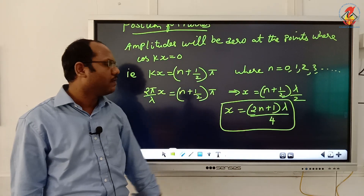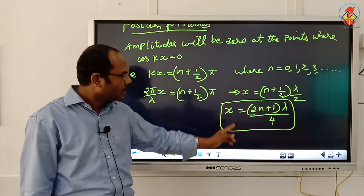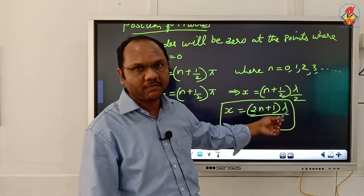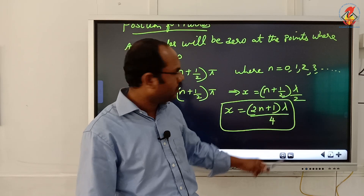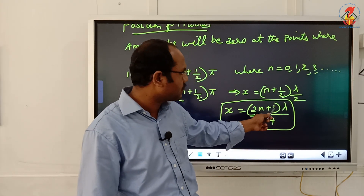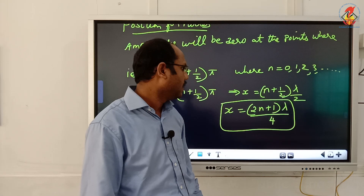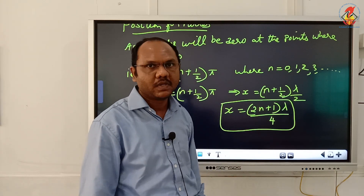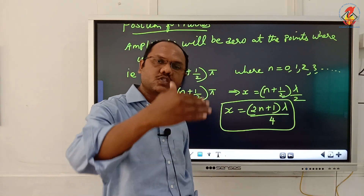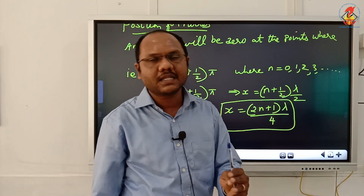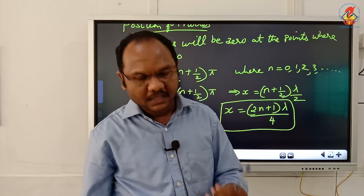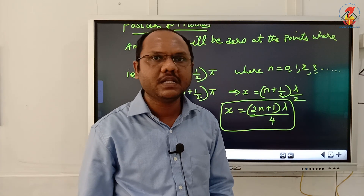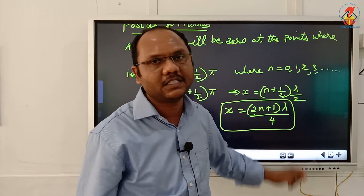When n = 0, the node position is λ/4. When n = 1, it is 3λ/4. When n = 2, it is 5λ/4. Then 7λ/4, and so on. So the node positions are λ/4, 3λ/4, 5λ/4, etcetera. This is the general condition for nodes.